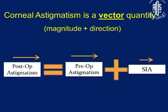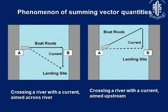What you are going to get in intra-op or post-op astigmatism is the vector summation of pre-op astigmatism and surgically induced astigmatism. This picture shows the phenomenon of summing vector quantities. If a boat is steered directly across the river and there is some current, it will be steered downward and the landing site will not be where you aimed.